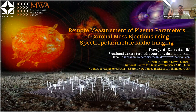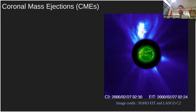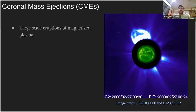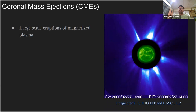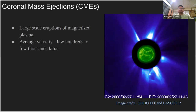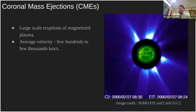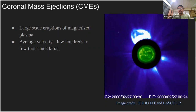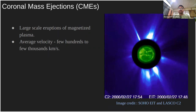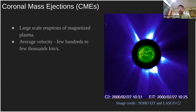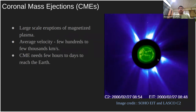Coronal mass ejection is one of the crucial phenomena which determines the space weather around the Earth. In the electromagnetic spectrum, the particular region I will be mainly focusing on today is the radio wavelength, particularly at the low frequency or the meter wavelength regime. The instrument I am using for this work is called the Murchison Widefield Array, which is the Square Kilometre Array precursor instrument in Western Australia.